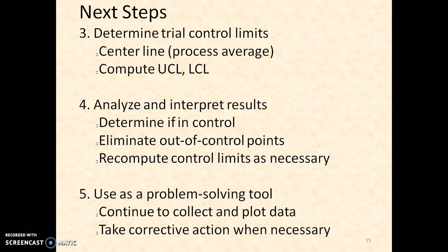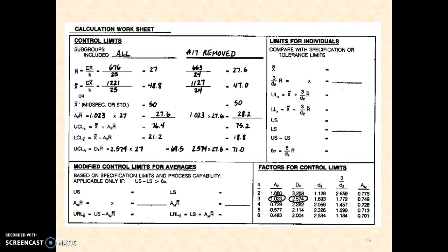The next step is to determine trial control limits: center line, which is the process average, and compute UCL and LCL. Analyze and interpret results, determine if in control, eliminate out-of-control points, and recompute control limits as necessary. Use as a problem-solving tool, continue to collect and plot data, and take corrective action when necessary.